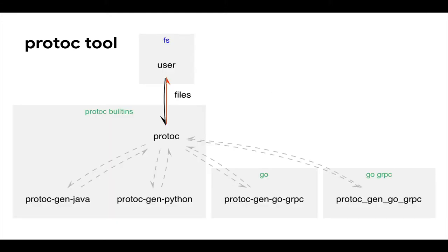If you're not familiar with protobuf, here's an overview of how the tool works. As a user, you launch a process, you give protoc some files, and then it consults with a number of plugins. Some of those plugins are built into the protoc tool itself, others are external binaries, and those are responsible for building the file content, which is then sent back and put onto the file system. The location of those files is a bit variable.